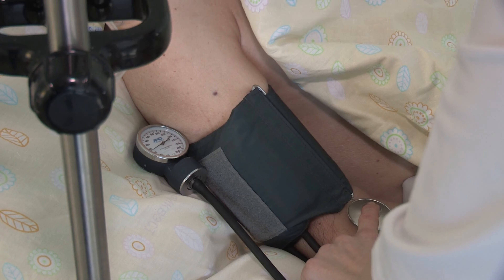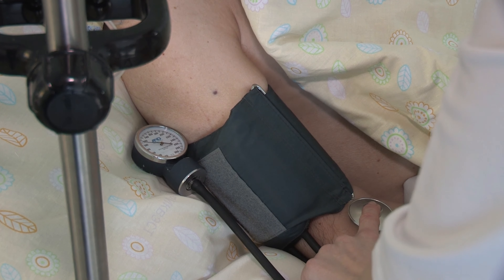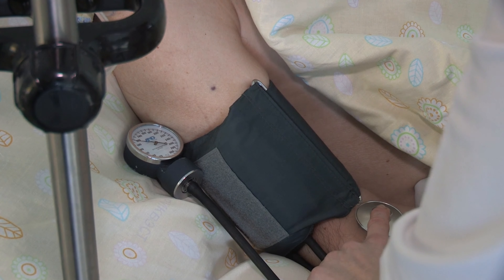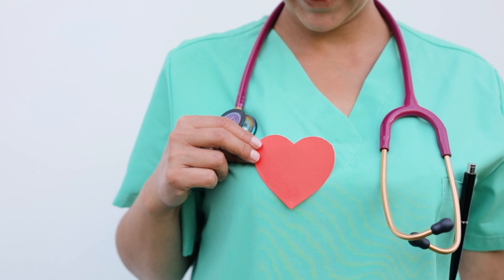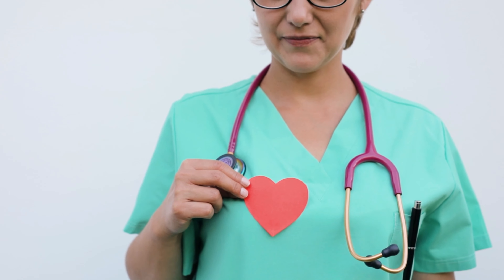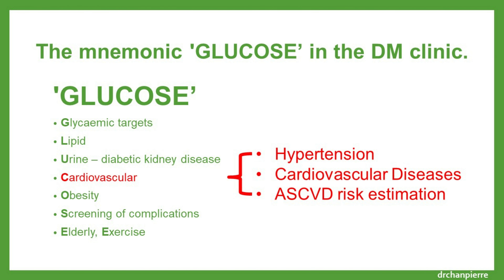C is for cardiovascular. Apart from blood pressure to assess any hypertension, there is also cardiovascular disease, which is defined as coronary heart disease, stroke, or peripheral artery disease. We can also estimate cardiovascular risk by using the ASCVD risk calculator.